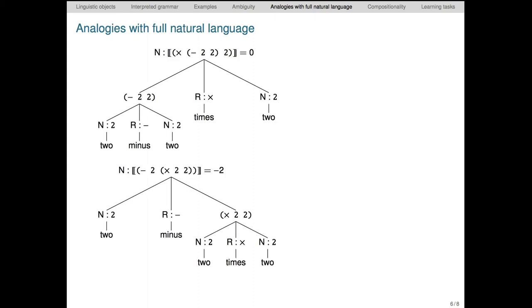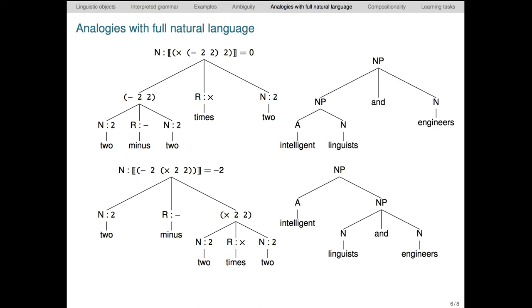The running math example is simple, but I think we needn't feel guilty as linguists about using it. As you just saw, it highlights ambiguity, and the ambiguity is one that is directly analogous to ambiguities that we find in full natural language, as you can see in these parallel trees. On the right, the top tree parses intelligent linguists as a unit, and so it says nothing about the intelligence of engineers, whereas the bottom one lets intelligent scope over the entire conjunction.